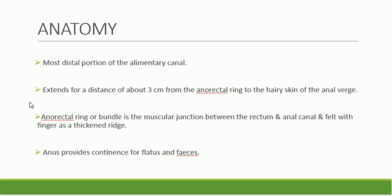The anal canal is the most distal portion of the alimentary canal (GIT). It extends for a distance of about three to four centimeters from the anorectal ring to the hairy skin of the anal verge. The anorectal ring is the muscular junction between the rectum and anal canal, felt as a thickened ridge on digital rectal examination. The function of the anus and anal canal is to provide continence for flatus and feces.